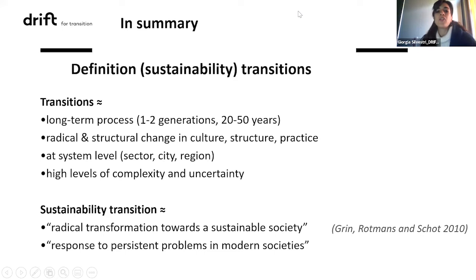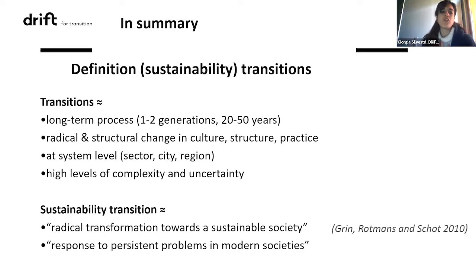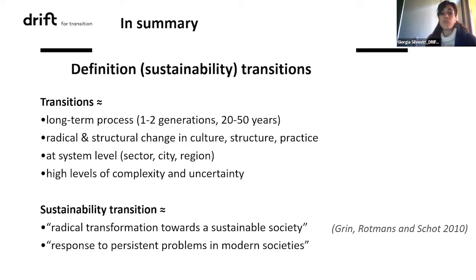In terms of how sustainability transitions are defined, they are considered long-term processes — around 20 to 50 years, more than one generation. They're really about changing radically in terms of culture — our beliefs, values, and principles — but also structure, meaning formal and informal rules, and also practices like our habits and daily routines. It's about supporting radical transformation at different levels in society: local, national, and international.